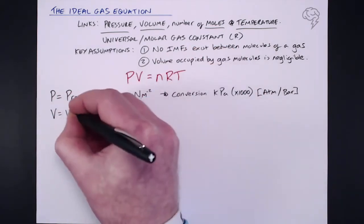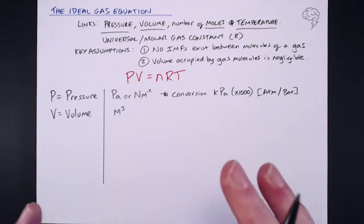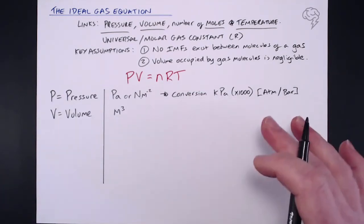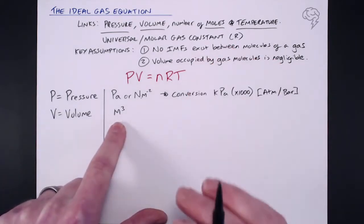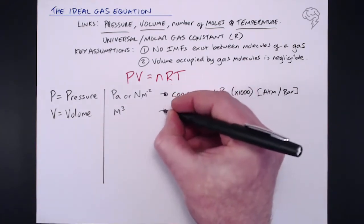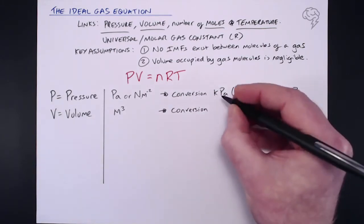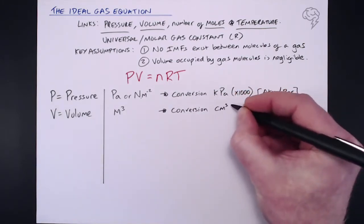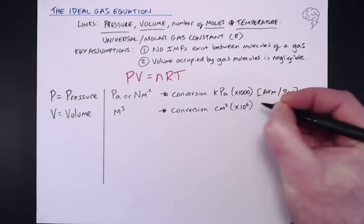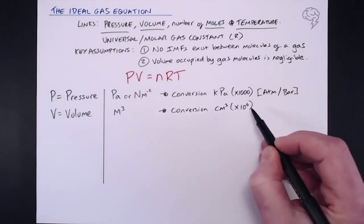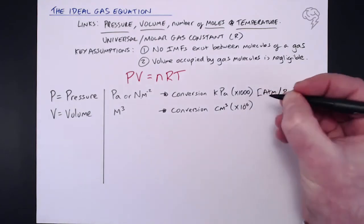Volume is next on our list. Now, our volume must be in meters cubed. Now, of course, when we're dealing with solutions and concentrations and mole calcs, everything's in decimeters cubed. With gases, it's meters cubed for ideal gas conversion. So the conversion is as follows. If you're given the volume in centimeters cubed, what you need to do is divide by a million. So in other words, times 10 to the minus 6. So if you're given the volume in centimeters cubed, just put times 10 to the minus 6 after the number, and it'll automatically convert it into meters cubed.